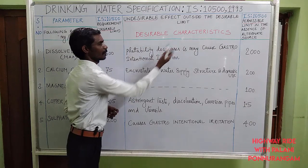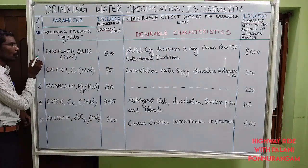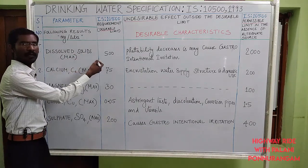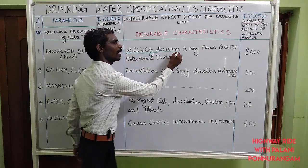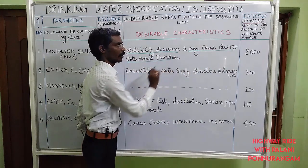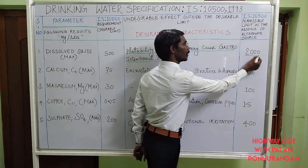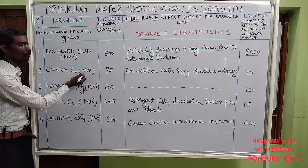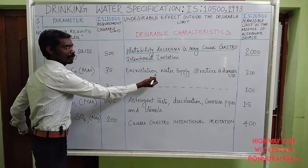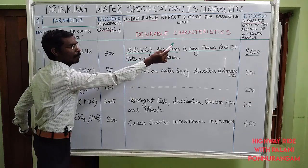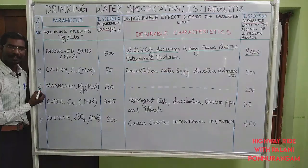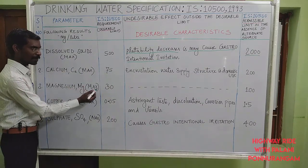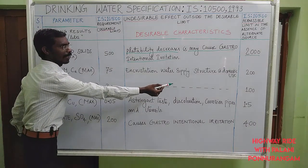The next is the desirable characteristics. The first desirable characteristic is dissolved solids. The maximum desirable limit is 500. If more than 500, palatability decreases and may cause gastrointestinal irritation. The maximum permissible limit is 2000. The second is calcium (Ca) — maximum desirable limit is 75, causing incrustation in water supply structures and adverse effect on domestic use; maximum permissible limit is 200. The third is magnesium (Mg) — maximum desirable limit is 30, maximum permissible limit is 100.